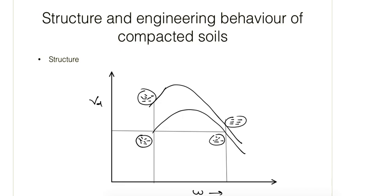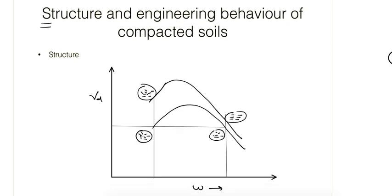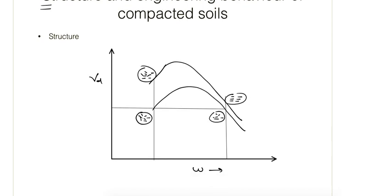Because of the compaction, the engineering behavior of the soils and the properties of the soil — such as structure, permeability, and compressibility — are also changed. So we have to understand these properties properly. The first is the structure of the soil.